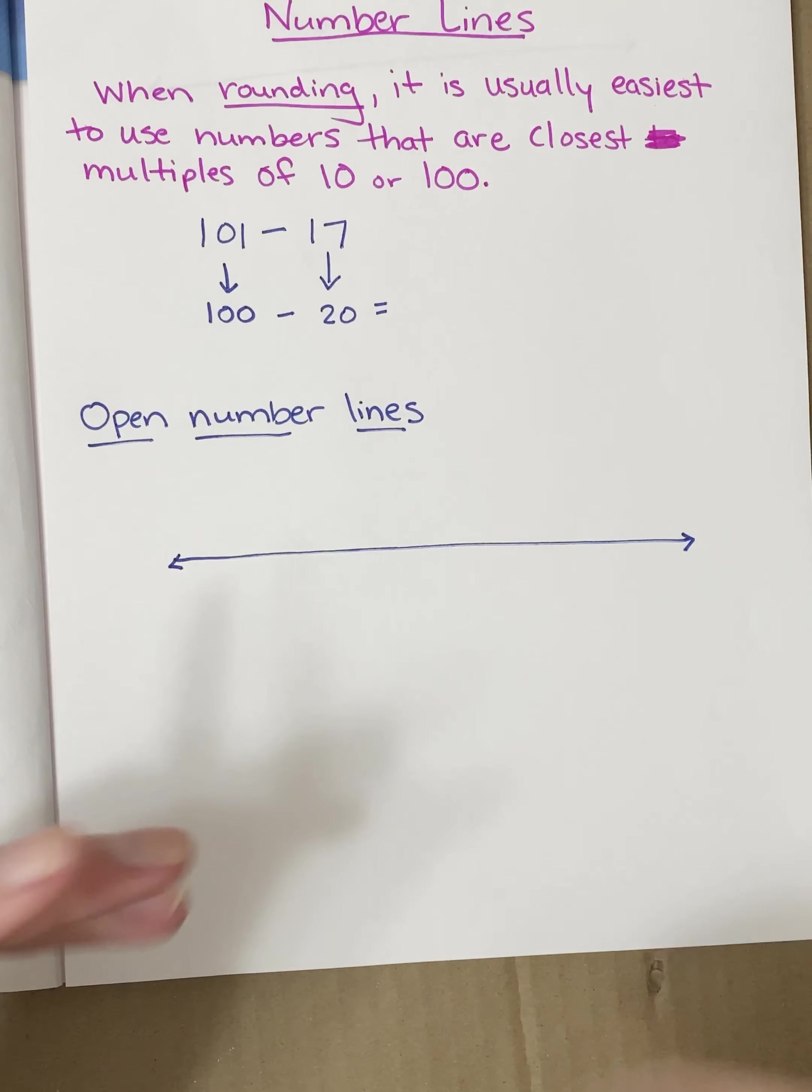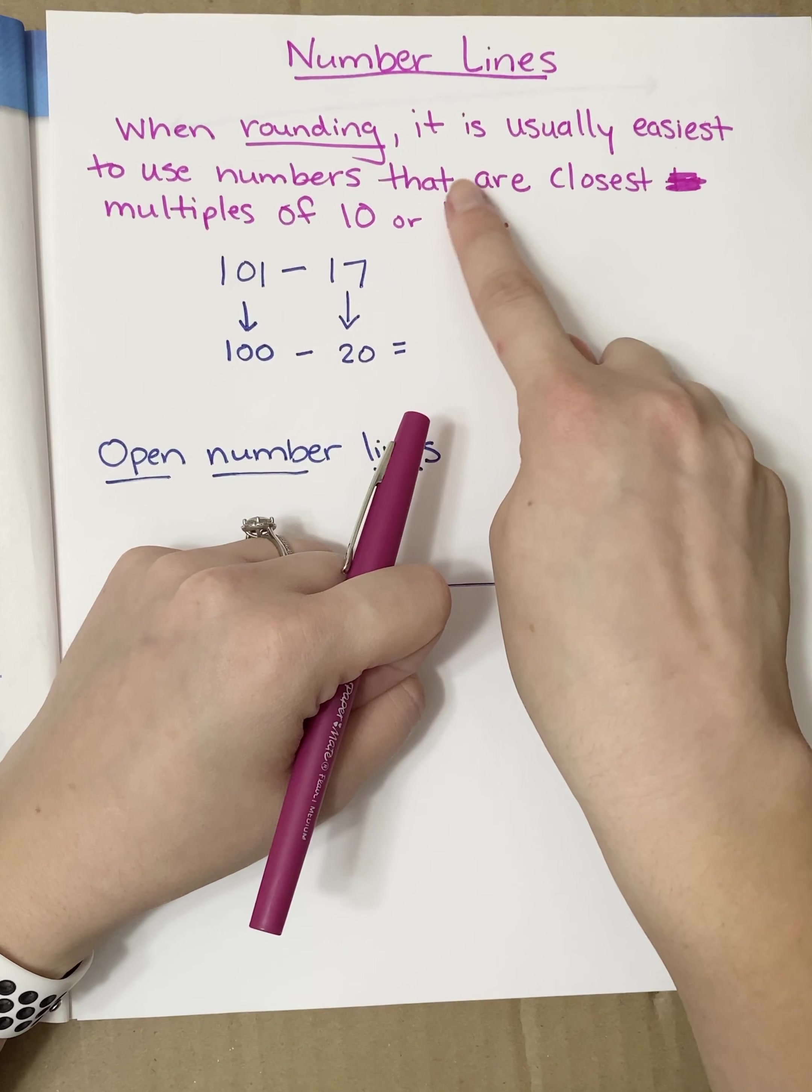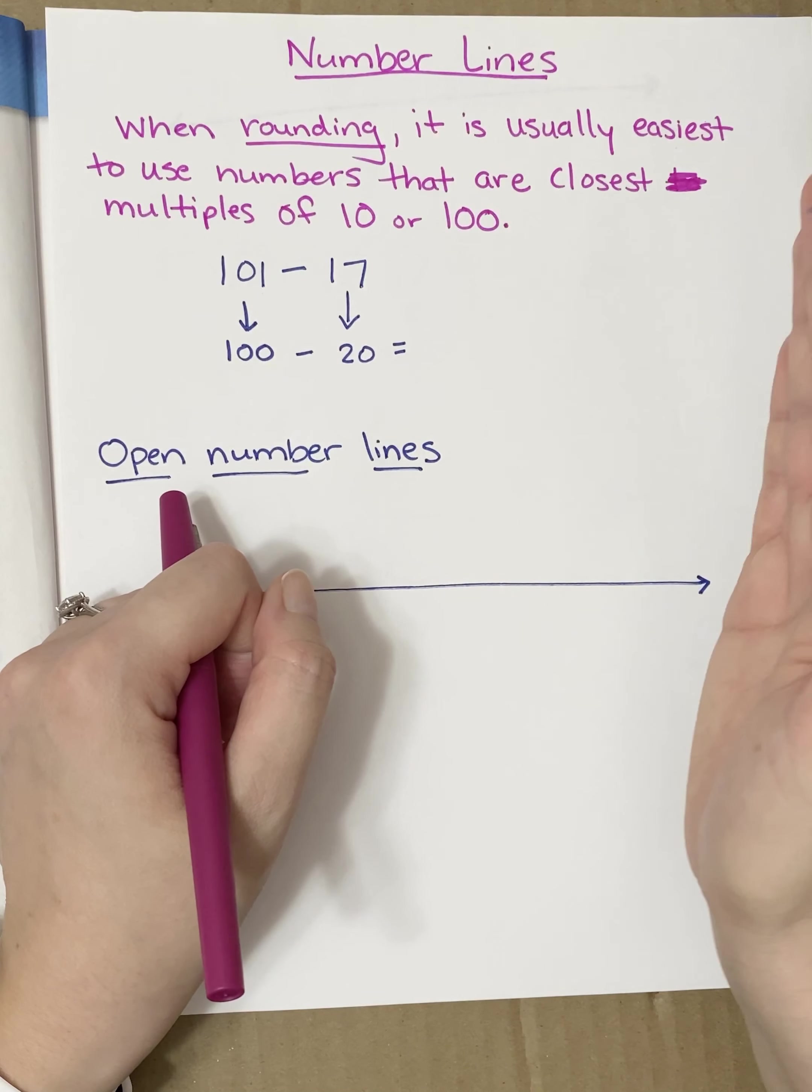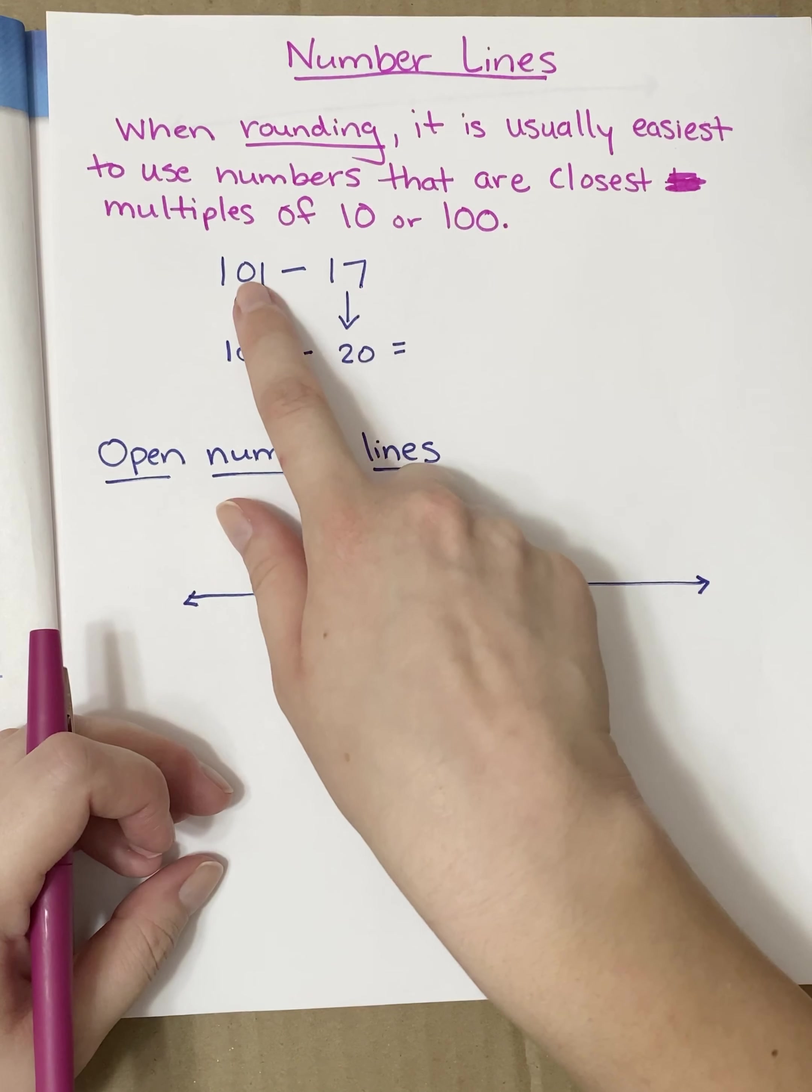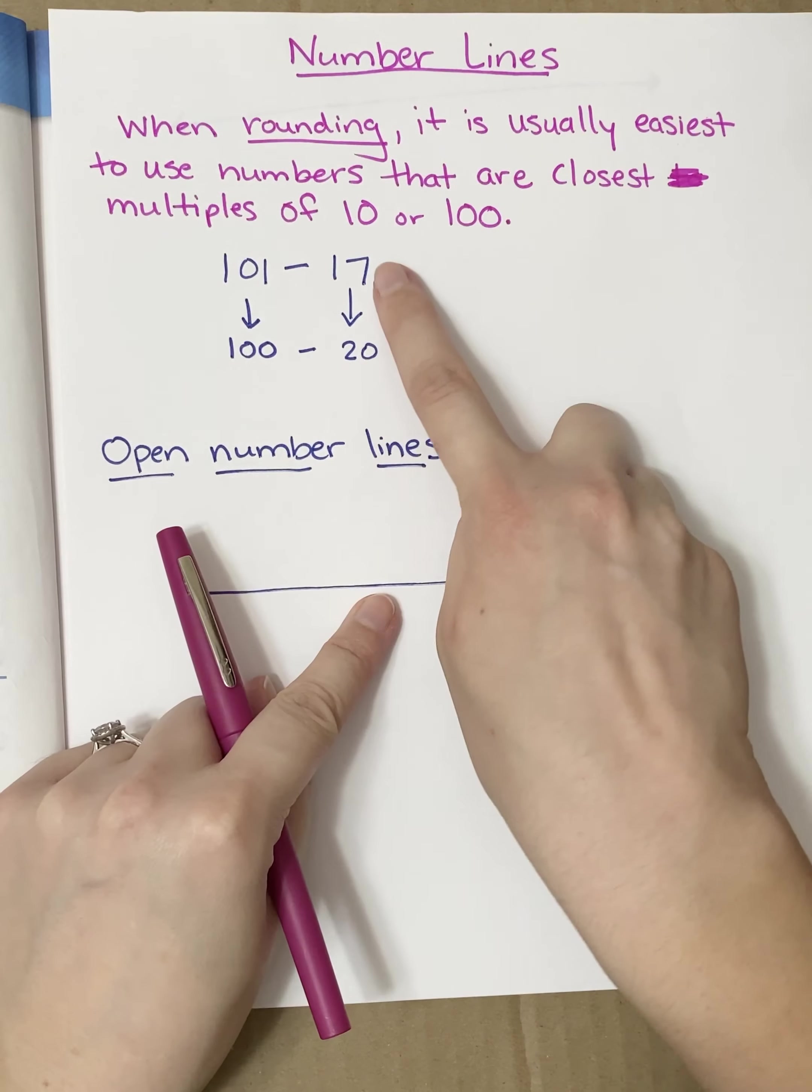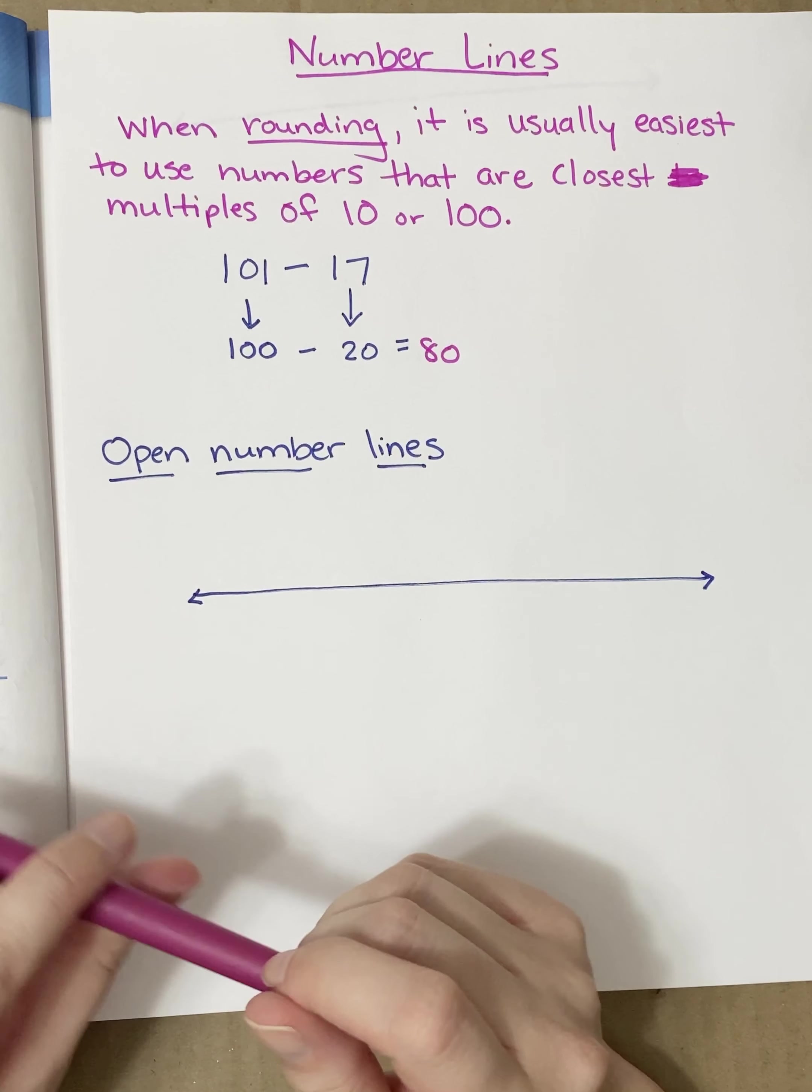The way we're going to be focusing today with rounding or showing our rounding is with number lines. And it's important when rounding, it's usually easiest to use numbers that are the closest multiples of 10s or 100s. So what that means is thinking 10s, 20s, 30s, 40s, 50s, or 100s, 200s, 300s, 400s. Like those, that's what we mean by multiples of 10s or 100, counting by those numbers. So like this one, 100 minus 17. 101 super close to 100. That's a really nice number. And 17 is really close to 20. So 100 minus 20 is easier to solve than 101 minus 17.